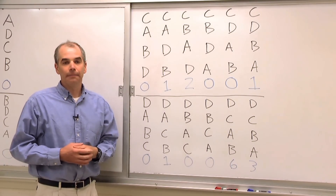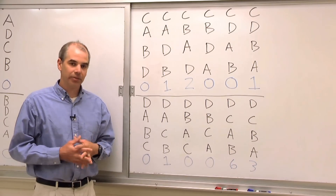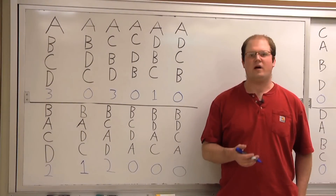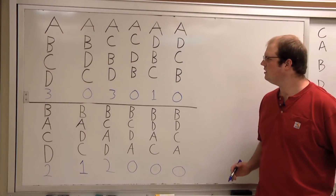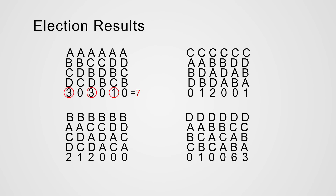Now Chris is going to count up and show you who wins our election by plurality. Going through the election numbers, three people chose A, B, C, D; three people chose A, C, B, D; and one person chose A, D, B, C. With plurality, candidate A has seven votes. For candidate B, we have two in the first column, one in the second, and two in the third, giving us five votes for B.